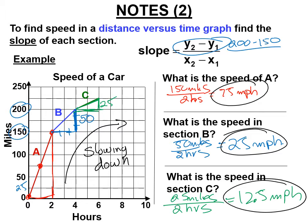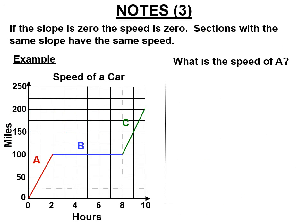That is what decreasing speed or slowing down looks like in these graphs. Anytime you have a horizontal section, the slope is zero, and that means the speed is zero. So in section A of the next graph, we went 100 miles in two hours — that's 50 miles per hour.